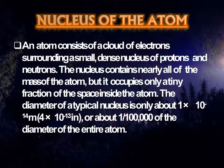What is the nucleus? An atom consists of a cloud of electrons surrounding a small dense nucleus of protons and neutrons. The nucleus contains nearly all of the mass of the atom, but it occupies only a tiny fraction of the space inside the atom. The diameter of a typical nucleus is only about 1×10⁻¹⁴ m, or about 1/100,000 of the diameter of the entire atom.